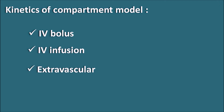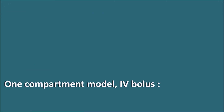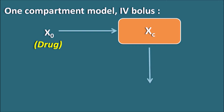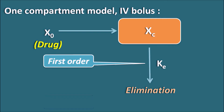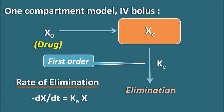In this video we will see mainly the IV route of administration — where the drug can be given as a bolus (single administration) or by infusion (continuous administration). In one compartment model IV bolus administration, the drug X0 is administered into the body where X is the amount reaching the single compartment, then the drug is eliminated. Since the drug is given by IV bolus, it directly enters the single compartment with no absorption kinetics. The elimination depends on the elimination rate constant KE and follows first order kinetics: the rate of elimination is −dX/dt = KE × X.